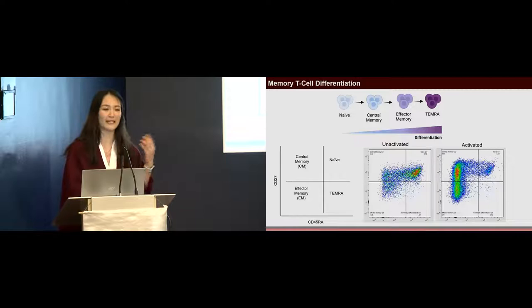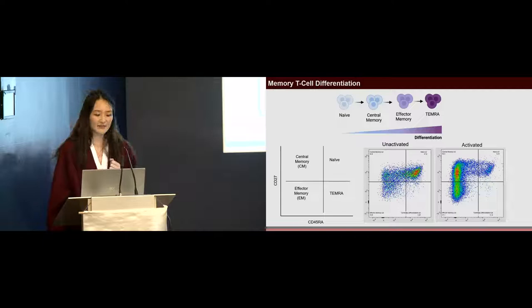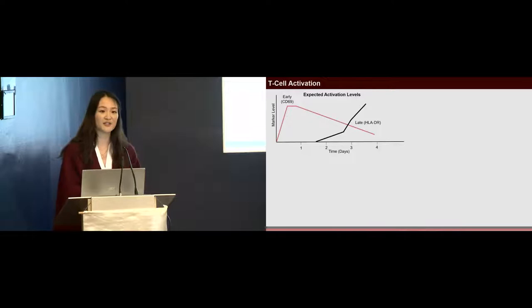Another marker of T cell activation is activation markers. One of the earliest cell surface antigens expressed by T cells after stimulation is CD69. Once CD69 is expressed, it acts as a co-stimulatory molecule for activation and proliferation. CD69's expression rapidly rises within the first 24 hours of activation and slowly levels off after three or four days. HLA-DR is a marker on T cells for late activation when its expression usually appears a bit later and peaks around the four or five day mark.